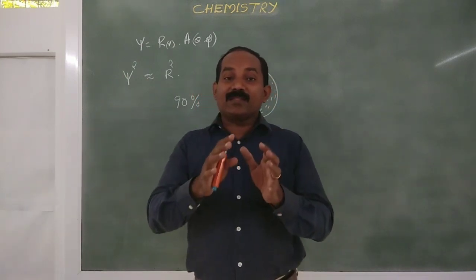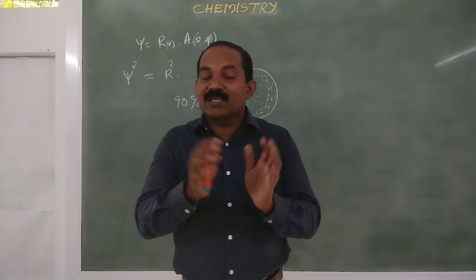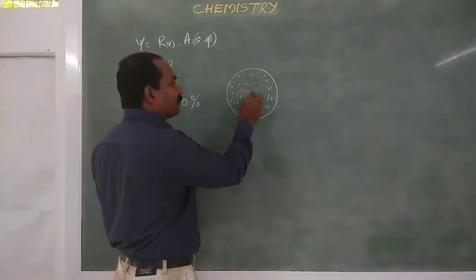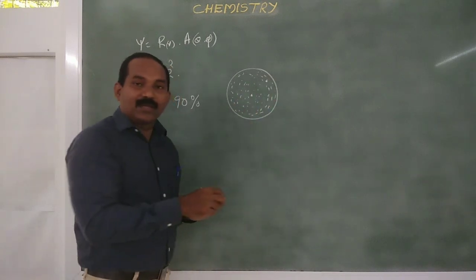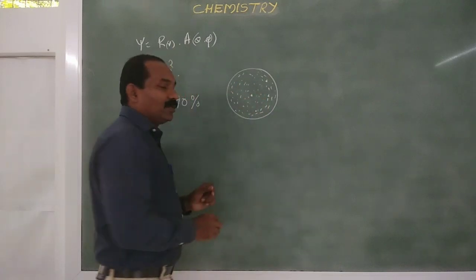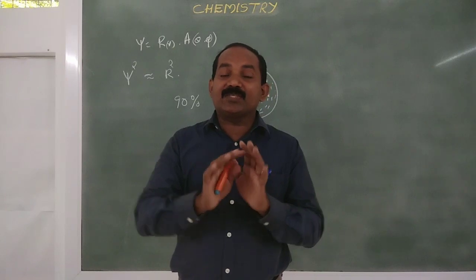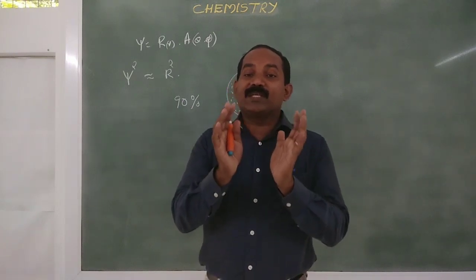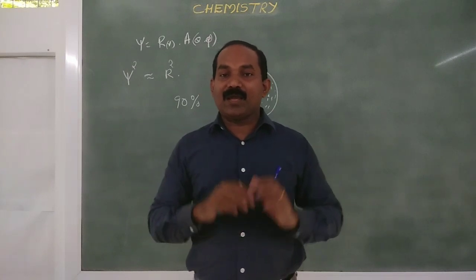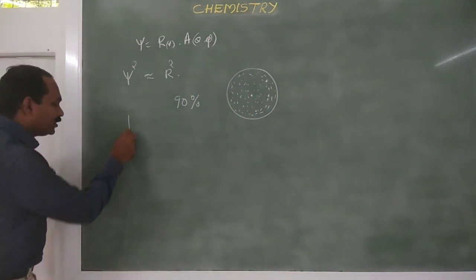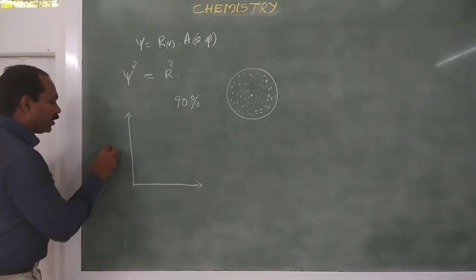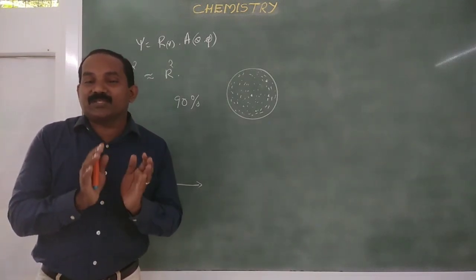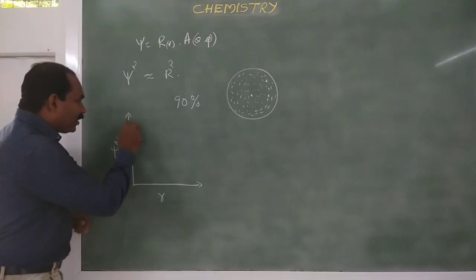The probability of finding the electron at a given point or at a given distance is equal in all directions from the nucleus. So the probability of finding the electron in the s orbital is equal at all distances. When we draw the variation of psi square as a function of r, we get a plot like this.